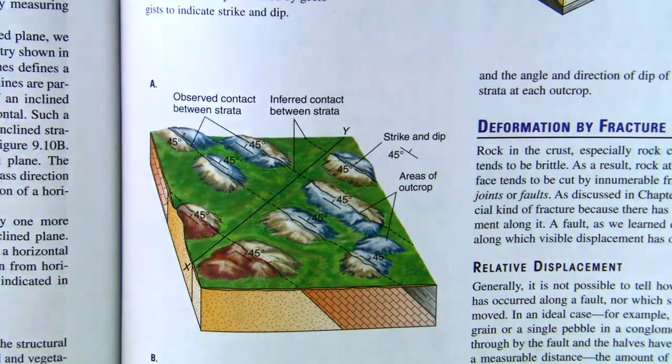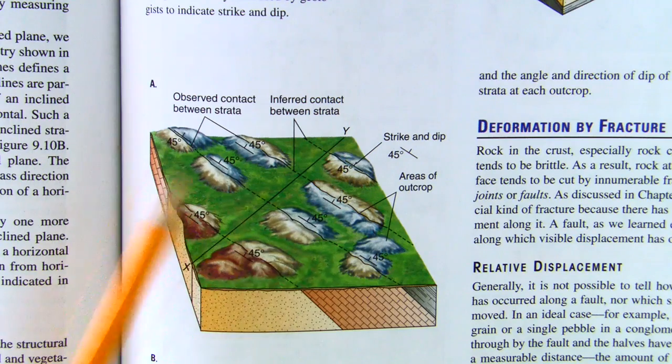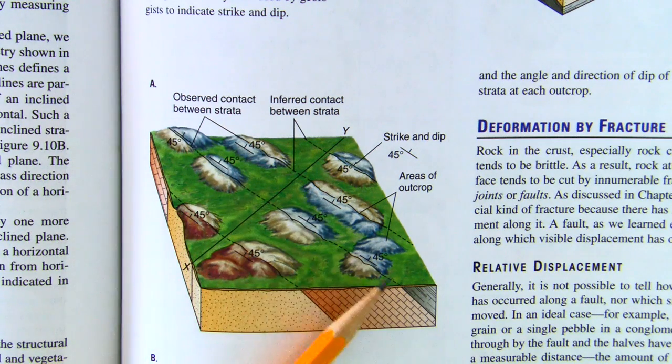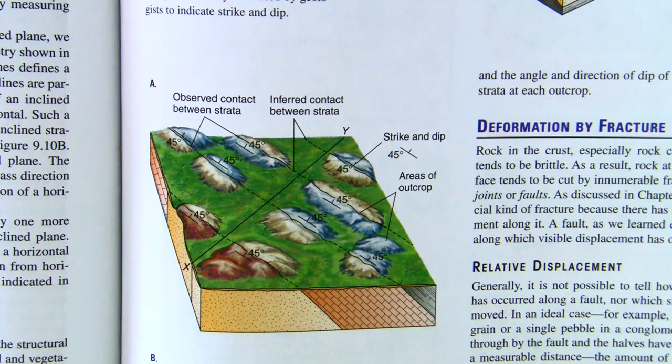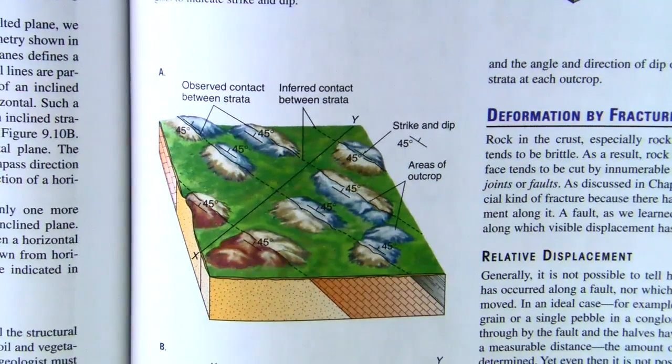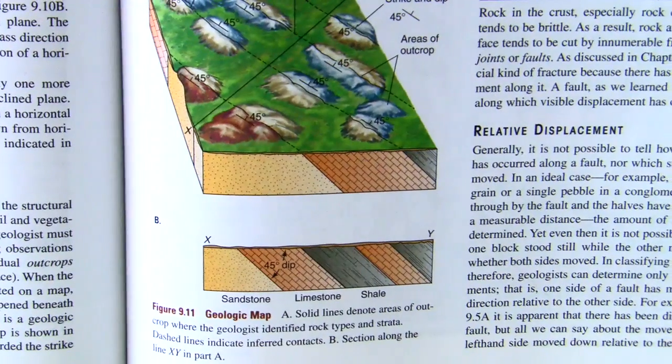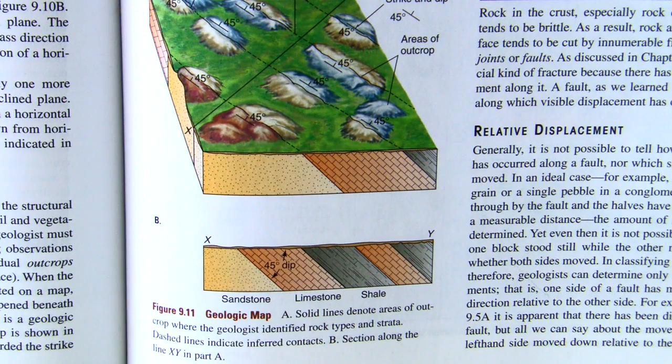And we see that these are all striking this way. And the dip is coming in from under the ground at a 45 degree angle and this way is down dip. If we could see it from the edge it would look rather like this.